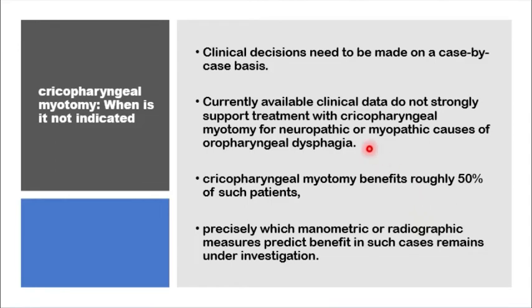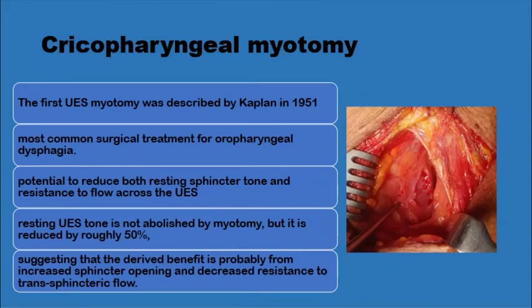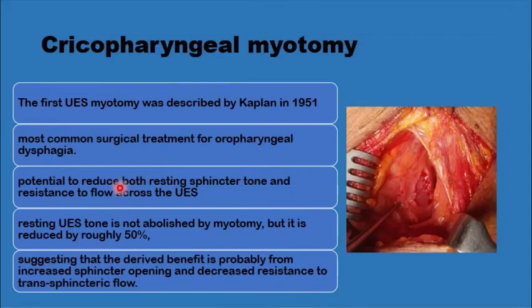Open cricopharyngeal myotomy was first introduced in 1951 for a patient with poliomyelitis, and remains the most common surgical treatment for oropharyngeal dysphagia. It reduces the resting sphincter tone of the cricopharyngeal muscle — resting tone is around 80 mmHg — and reduces resistance to bolus flow. The myotomy does not abolish resting tone but reduces it by 50%, decreasing resistance to flow across the upper oesophageal sphincter.